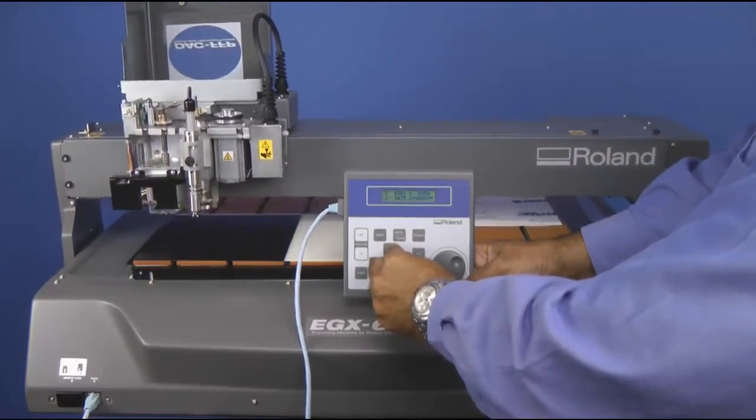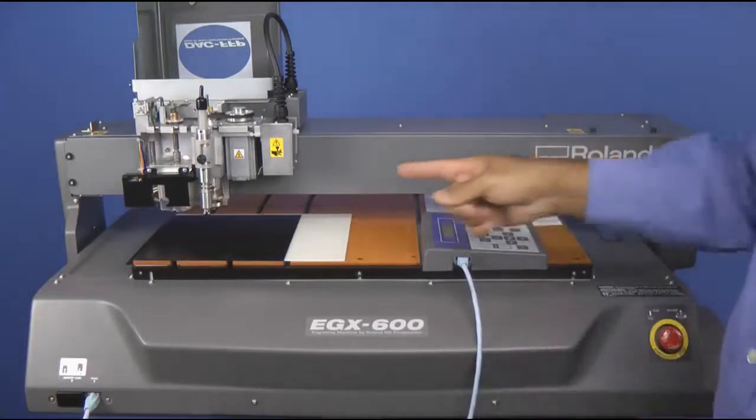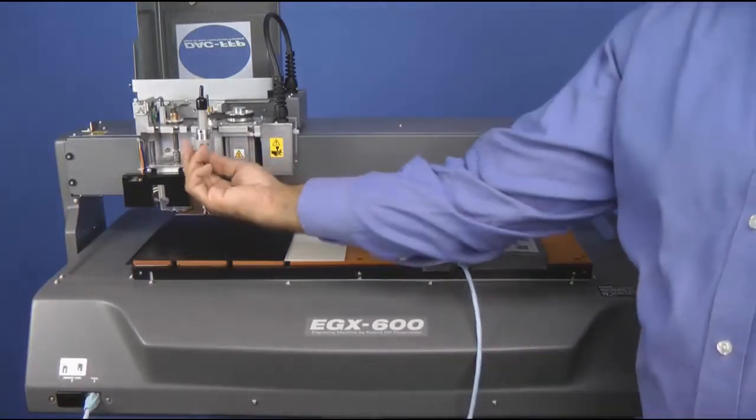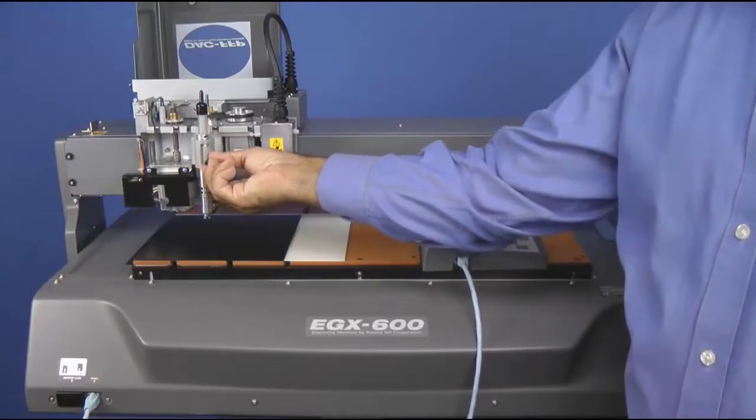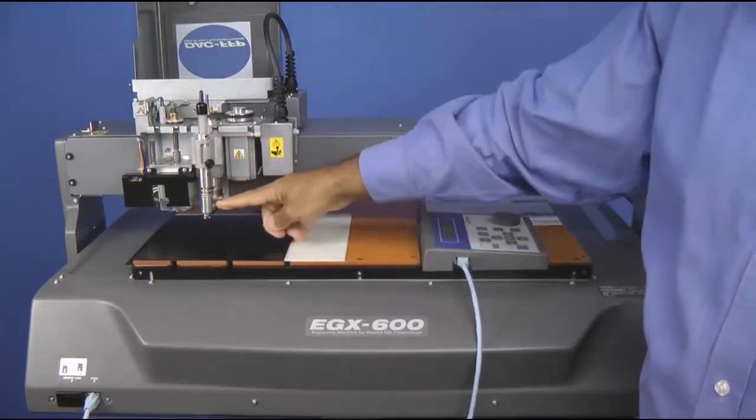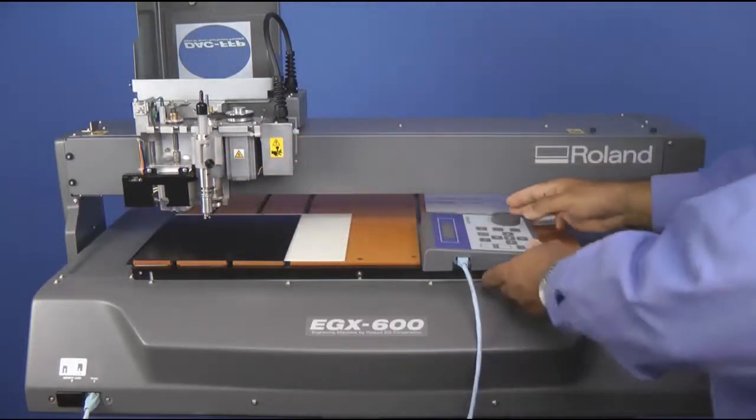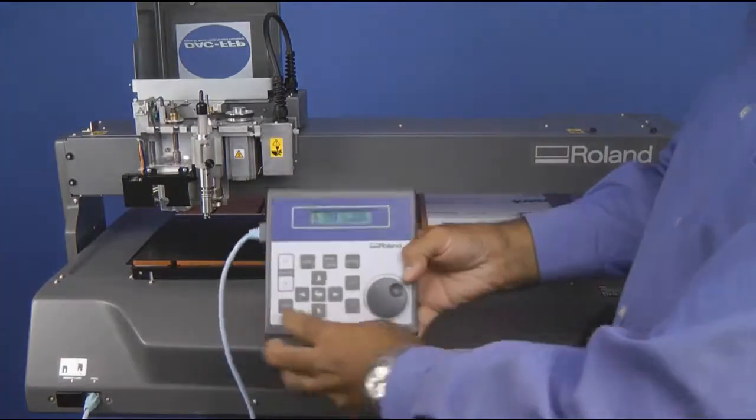At this point, using the arrow keys, we want to bring the auto raster pen over a flat area of the material. We'll go ahead and loosen the screw on the front of the raster pen and lower it and lock it in place. We're going to set our zero position for our auto raster inserter.